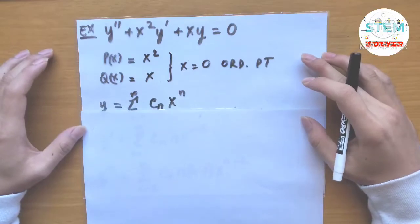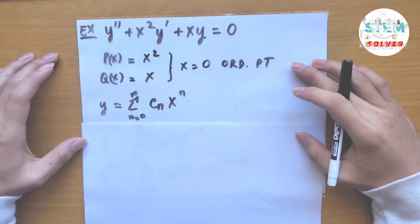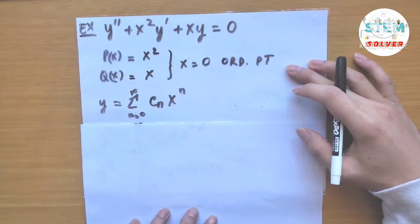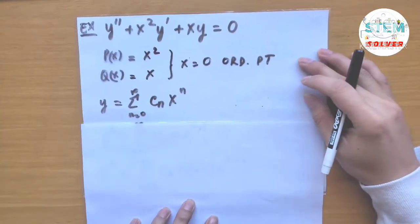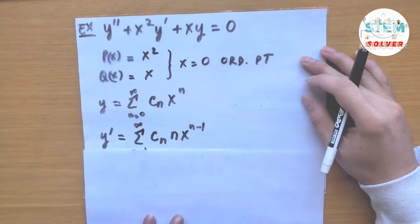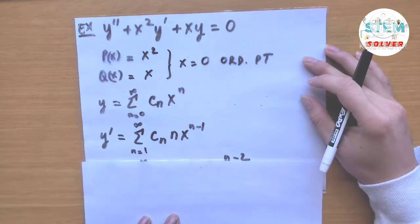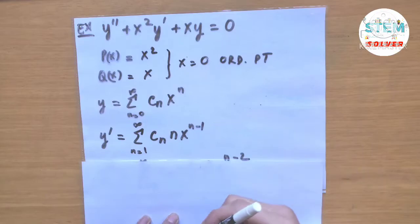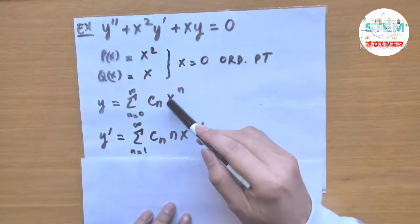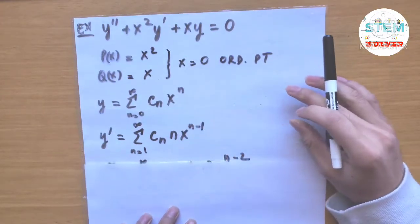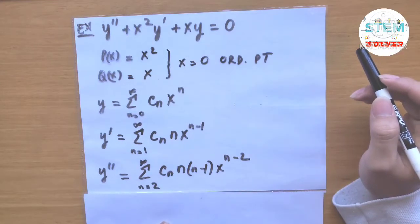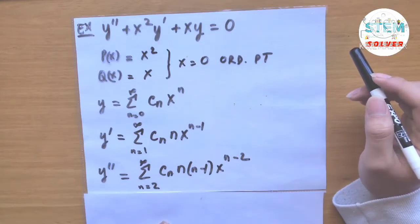Our solution is given by y equals the power series from 0 to infinity of c_n x to the n. Taking the first derivative gives the power series from 1 to infinity of c_n times n times x to the n minus 1, bringing down the exponent and subtracting by 1. The second derivative is the power series from 2 to infinity of c_n times n times n minus 1 times x to the n minus 2.